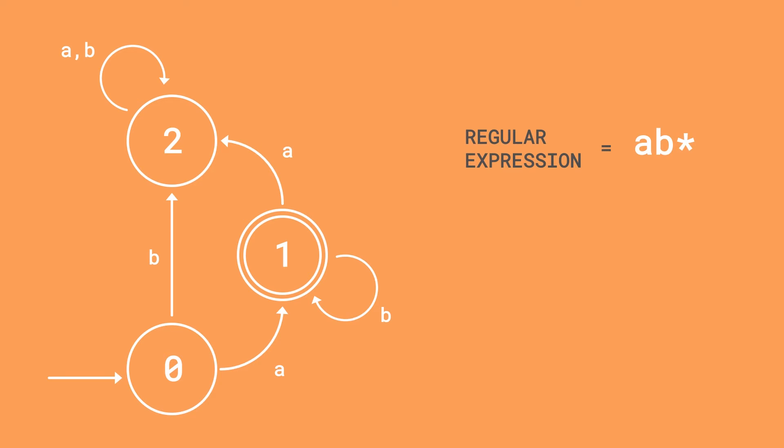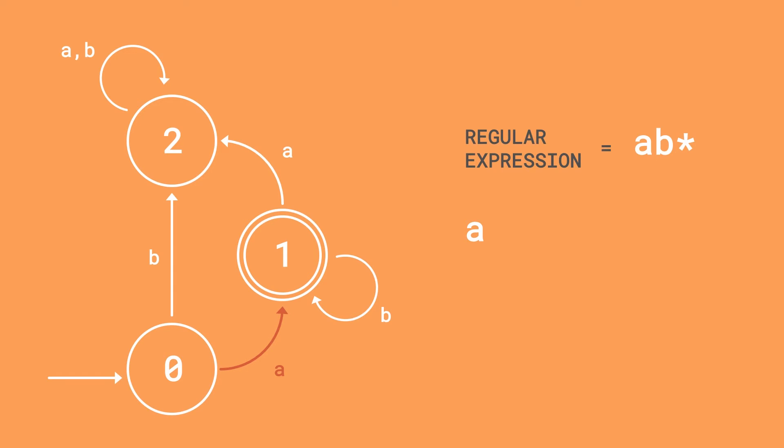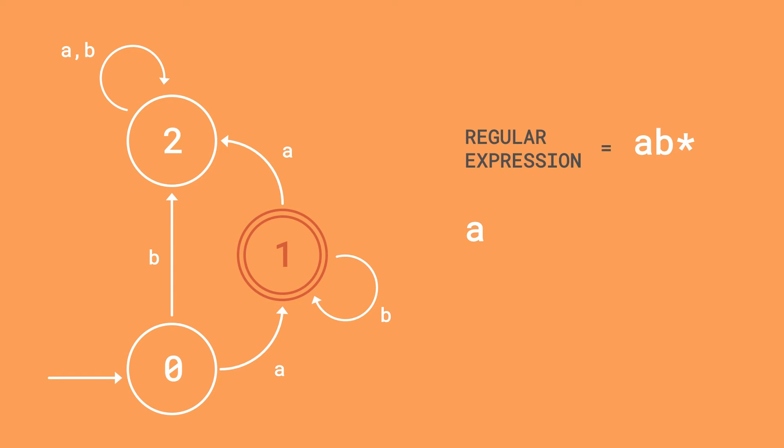Let's break down this diagram. The state labelled zero is the initial state, so we can start there. If our first input is 'a', then you transition to one, which is the accepting state. If you then input 'b', then you just remain at one, because the arrow on the diagram loops back on itself. No matter how many 'b's you add from one, you just keep transitioning back to that accepting state. Hopefully you can see that this matches our regular expression, and being at the accepting state tells us that our input string is okay.